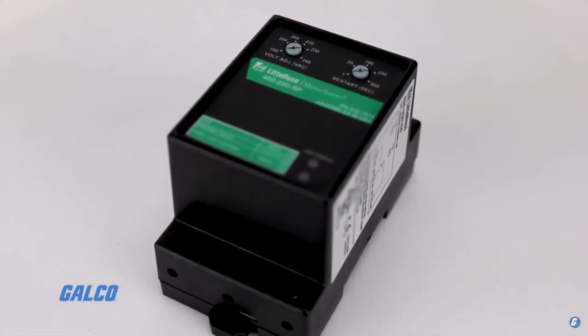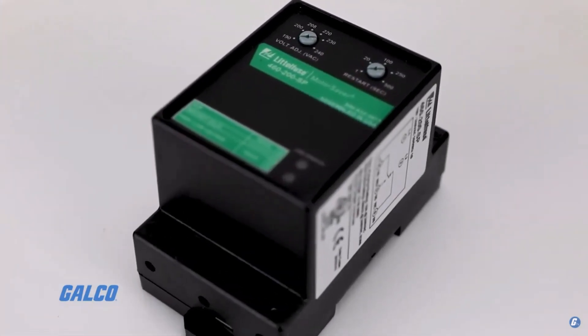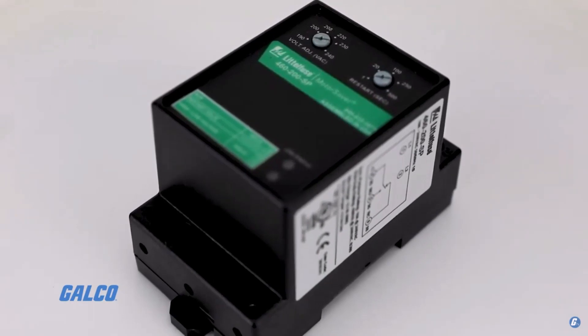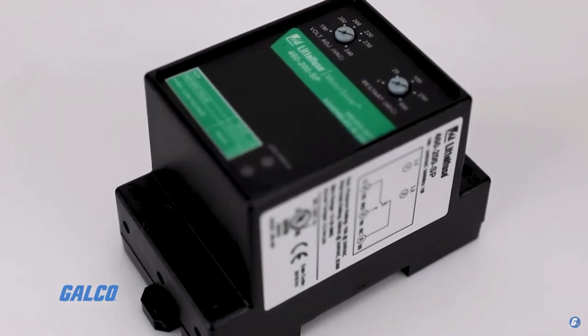The 460 relay is microprocessor-based with voltage and phase sensing to constantly monitor three-phase voltage and detect harmful line conditions.